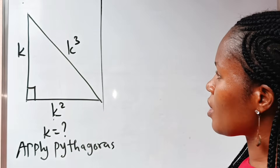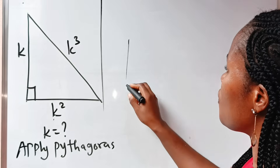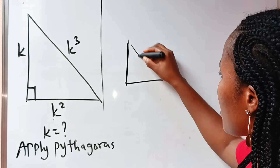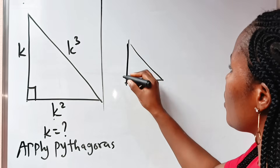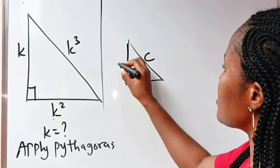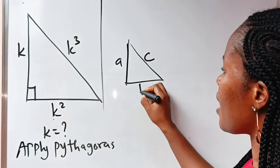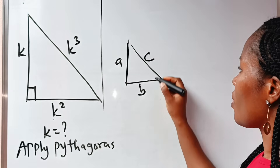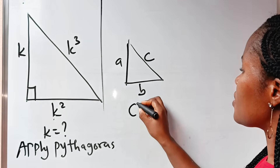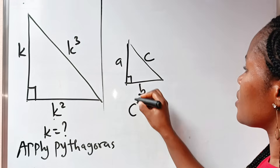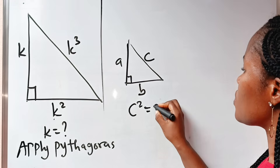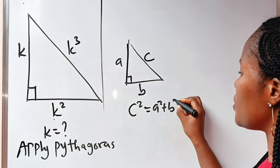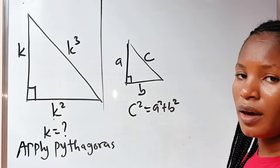According to Pythagoras, if you have a right-angled triangle, this is C, this is A, and this is B. C squared is equal to A squared plus B squared.